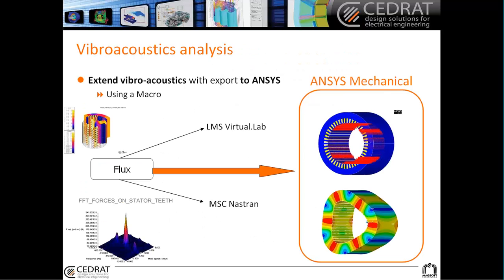We already had some couplings with the Vibro Acoustics module — between Flux and EVMS Virtual Lab, and Flux and MSC Nastran. Now in Flux 2.1, we implemented a new export of forces for Vibro Acoustic Analysis to ANSYS Mechanical. Since ANSYS Mechanical is one of the most used software for Vibro Acoustic Analysis, this export lets all Flux users benefit from vibro acoustic analysis very easily.